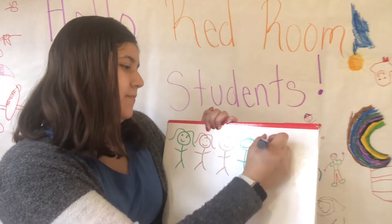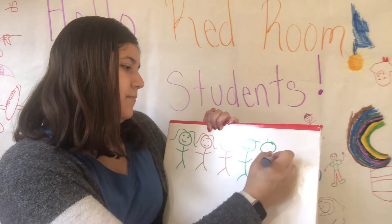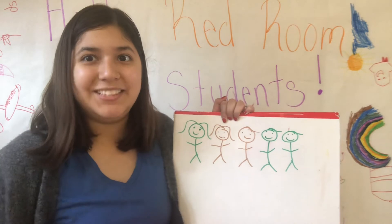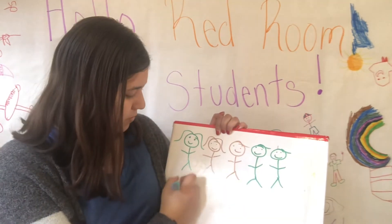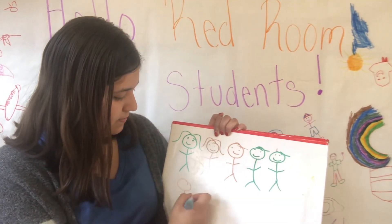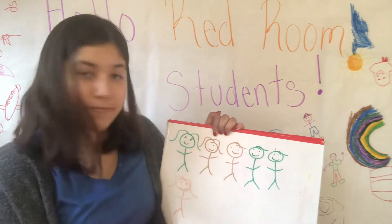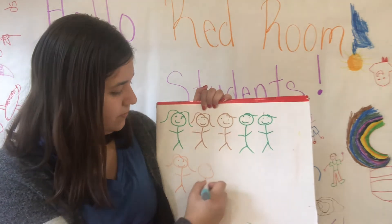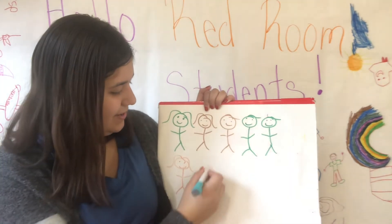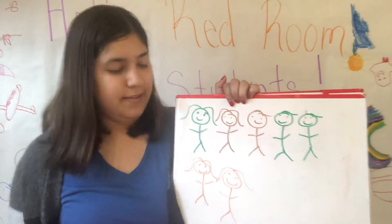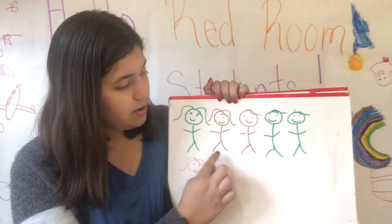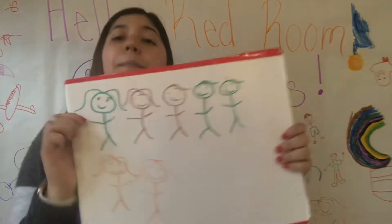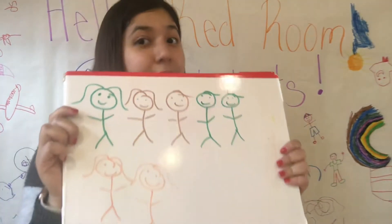One, two brothers. Now I am going to make my sisters. This is my family. This is me, my mom, my dad, my brothers, and my sisters.